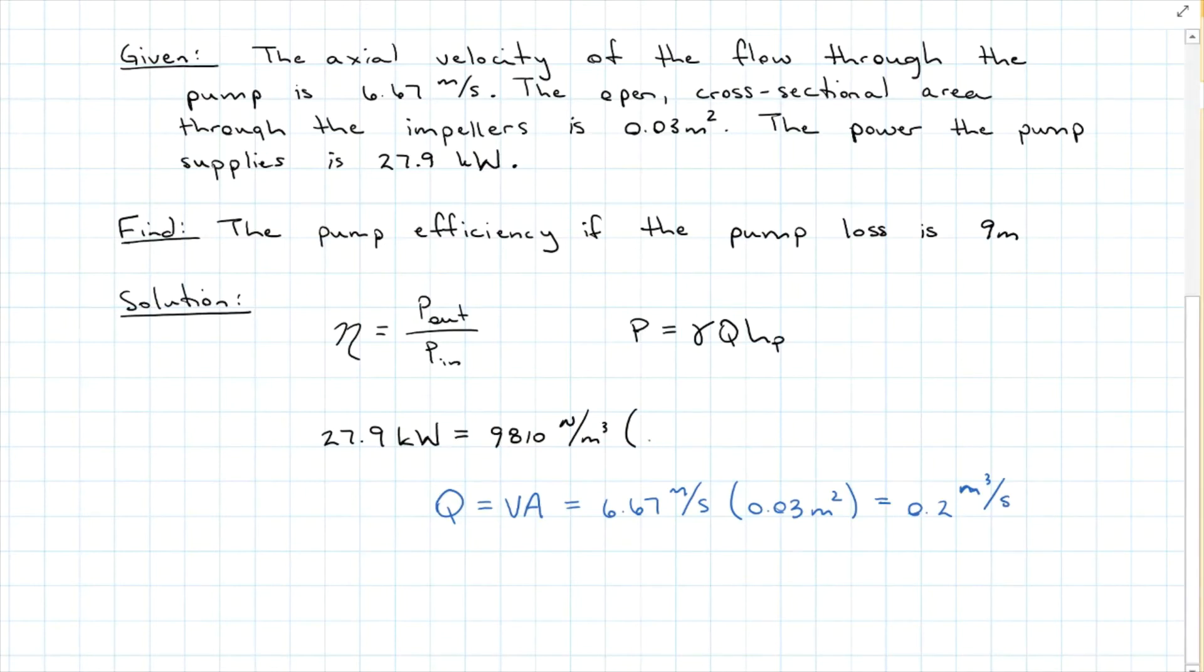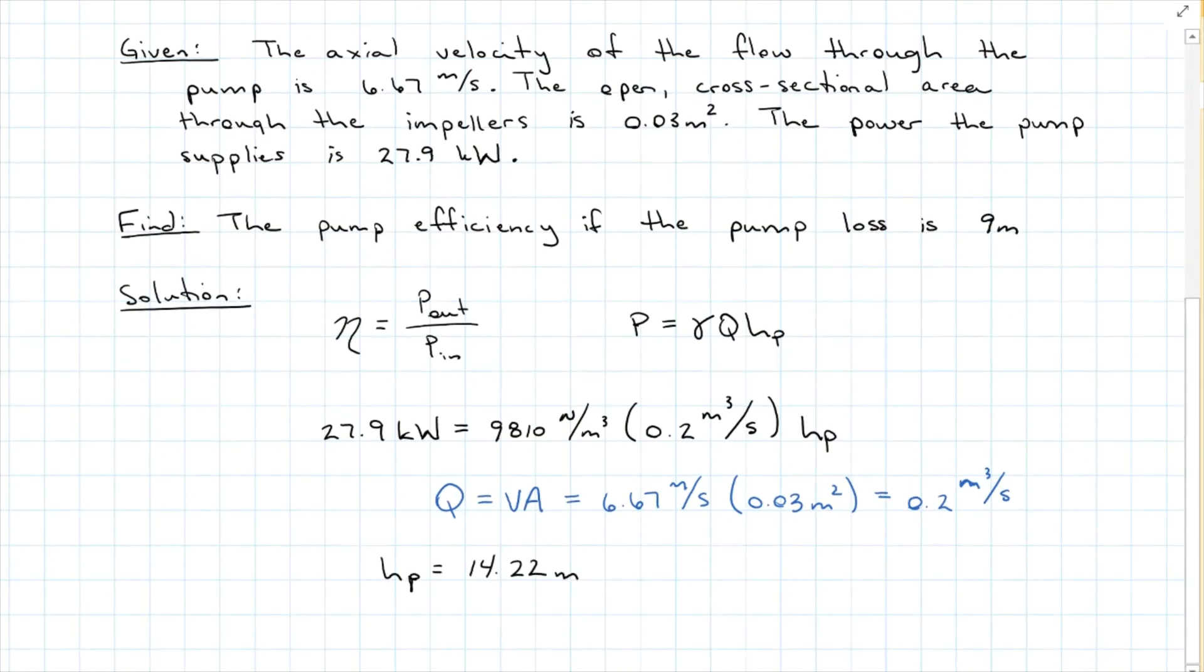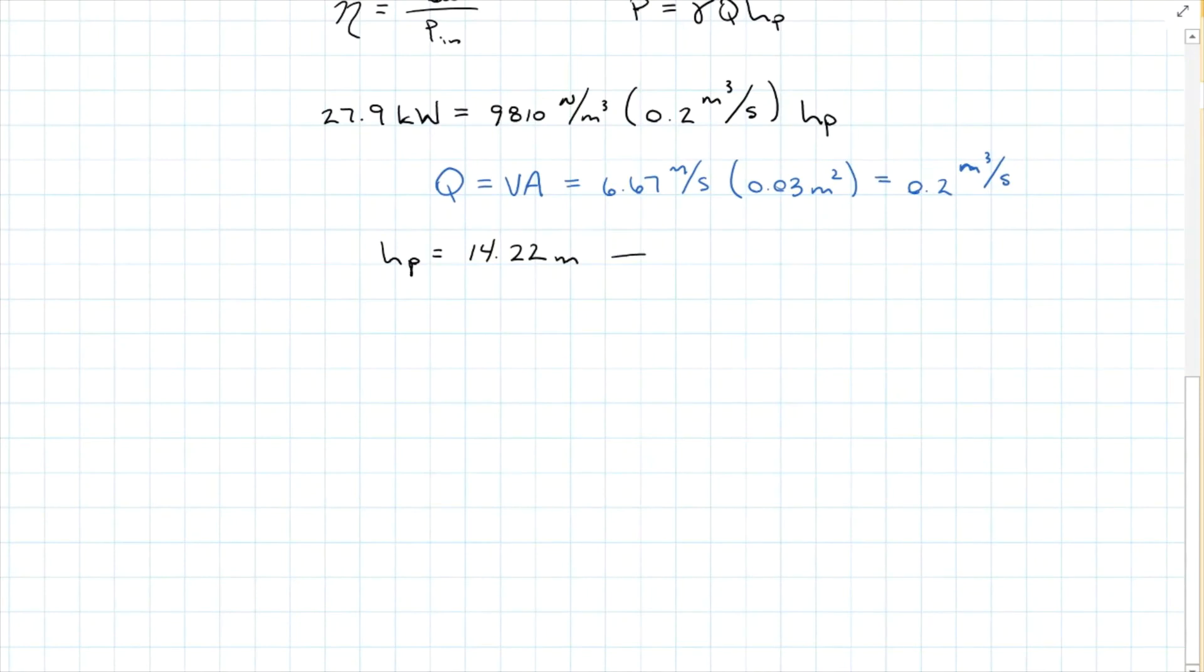So that goes in here, Q, 0.2 meters cubed per second, and the pump head is what we're looking for for our efficiency. Now this head is the intended head that comes through the pump, but it says here in the find statement that the pump has a loss of 9 meters. So that means this is the incoming. So the outgoing will be that 14.22 meters minus the 9 meter loss.